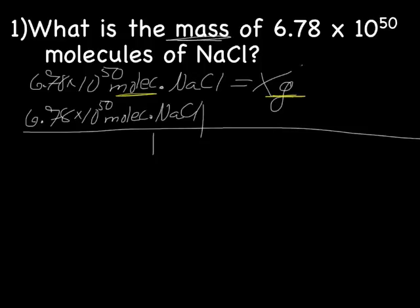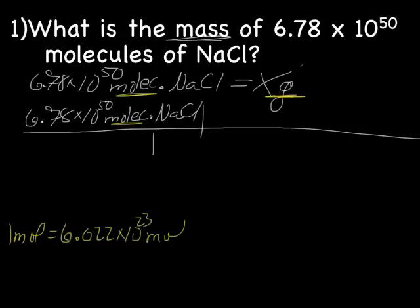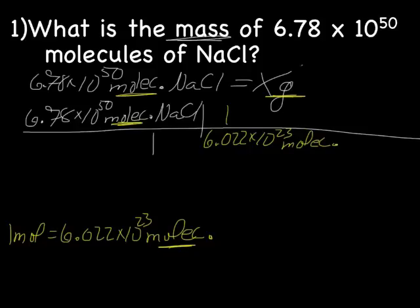The question is now, which one do we start with? If we look at our problem, remembering everything we're doing is to cancel out units, we have molecules already in our problem, so let's use the equality with molecules in it. So we'll have one mole equals 6.022 times 10 to the 23rd molecules. Being that we have molecules on top here, we're going to put the molecules on the bottom so they cancel out. 6.022 times 10 to the 23rd molecules on the bottom, one mole on the top. So our units cancel out, and now we're left with moles.